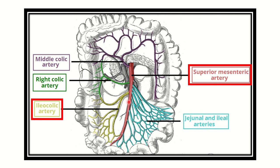We can see that it arises from this artery, and this artery is the superior mesenteric artery. So the ileocolic artery is derived from the superior mesenteric artery. The superior mesenteric artery itself is derived from the abdominal aorta — it is an anterior branch of the abdominal aorta.